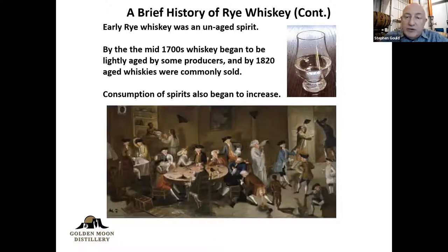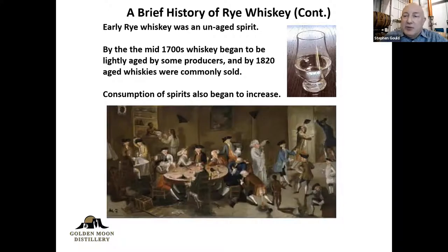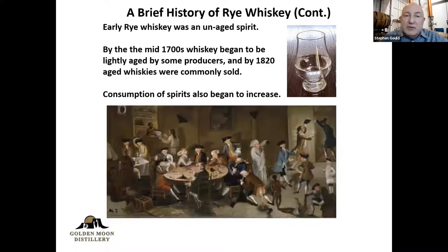What that means is what we would view as rye whiskey today was the predominant spirit in the Americas until the United States went into prohibition in 1920. Now early rye whiskey was an unaged spirit — basically they were running it on the still, putting it into a cask, and selling it immediately. Sometimes they were literally filling it off the still. In the early days they didn't really understand heads cuts and tails cuts, so the spirit was pretty rough, pretty oily, and probably had a fair amount of methanol in it. By the mid-1700s people figured out that if you let it sit in barrels for a while, it would take on a little bit of the oakiness and start to smooth the flavor out. So starting in the mid-1700s you see distilleries selling a base grade clear product and a premium product aged a few weeks or a few months.